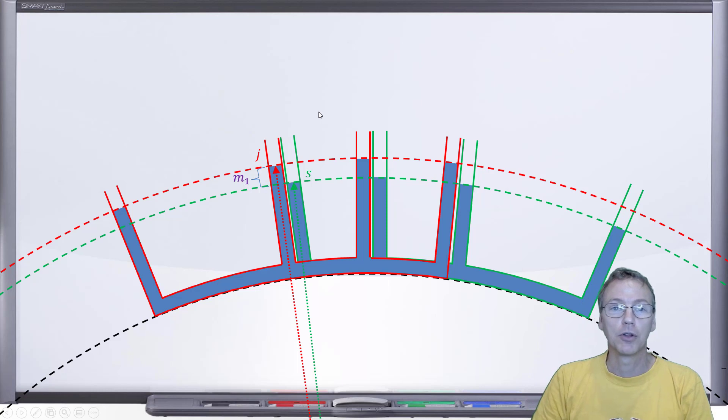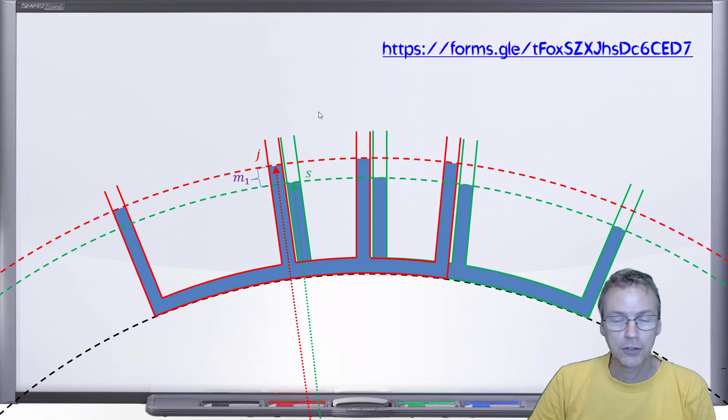And then up there, there's the form, and I'll put it down in the link, of course, where you can enter that value. The next value I want is, of course, M2.